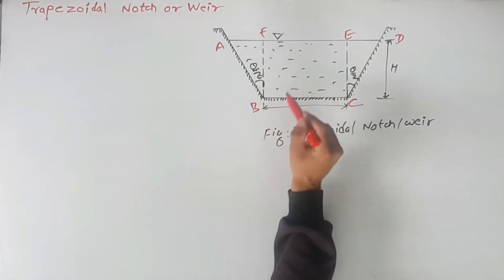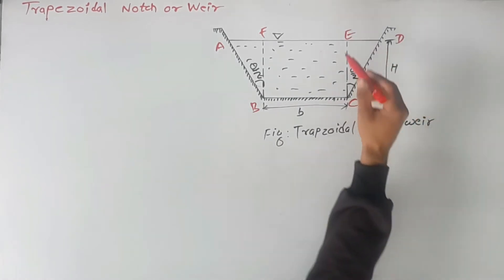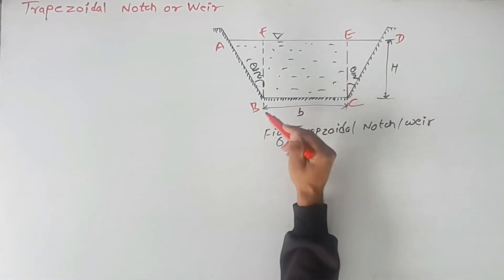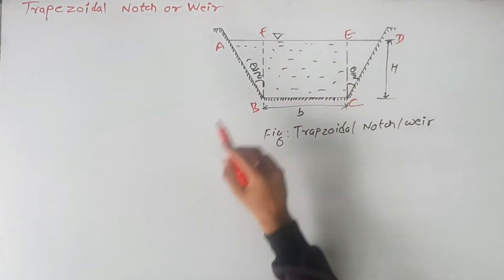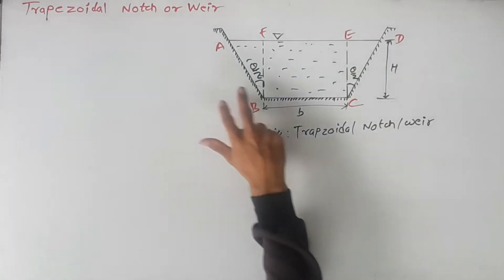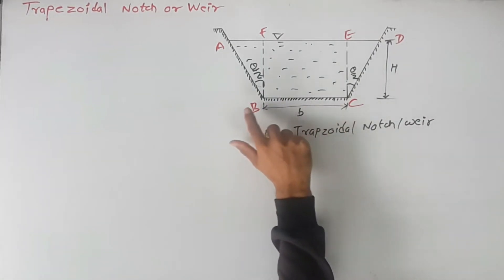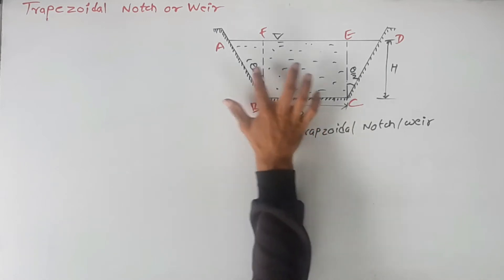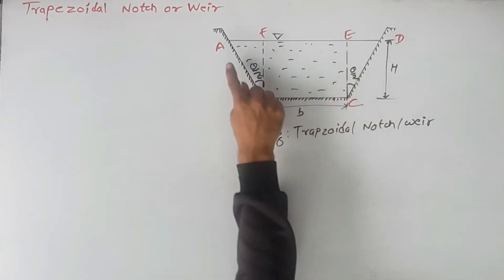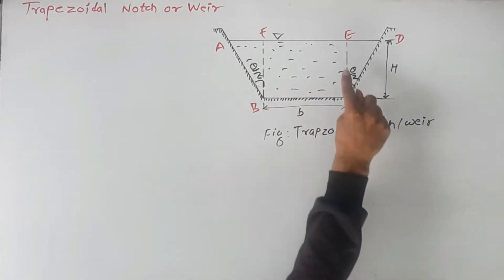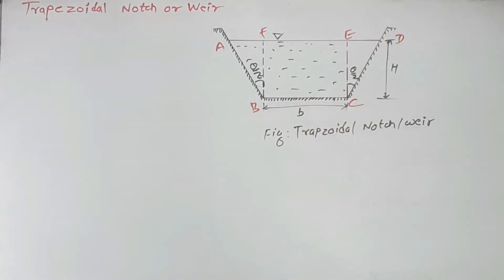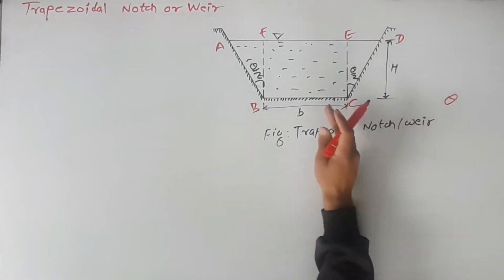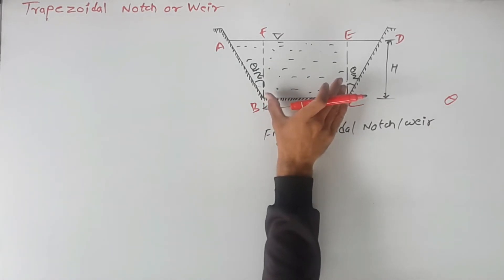Here we can say triangle ABF and triangle CDE, and one rectangle ABCEF. So we can say that trapezoidal weir is a combination of triangular notches ABF and CDE, which form a single triangular notch of angle theta, plus a rectangular notch.